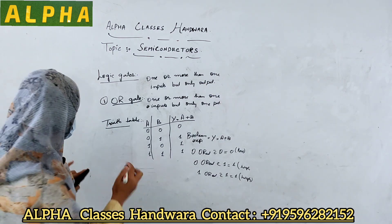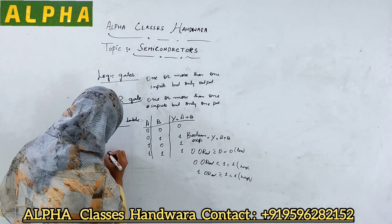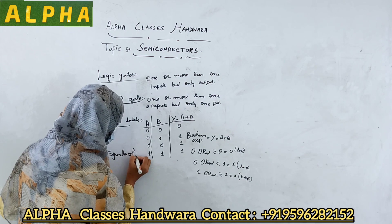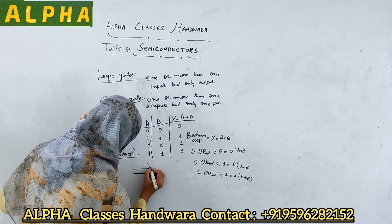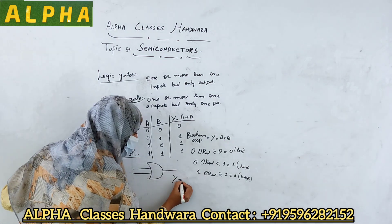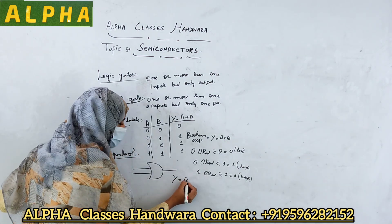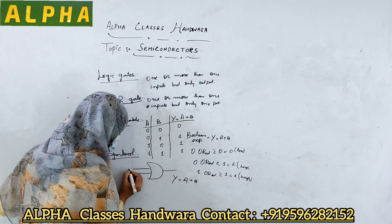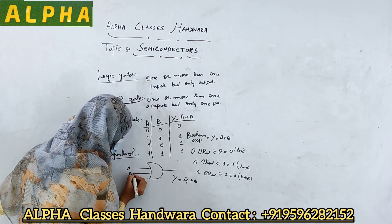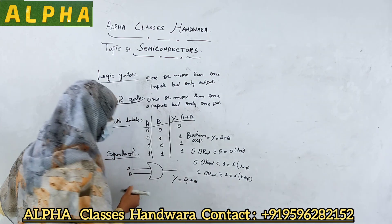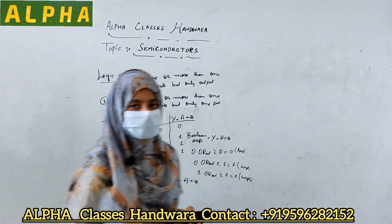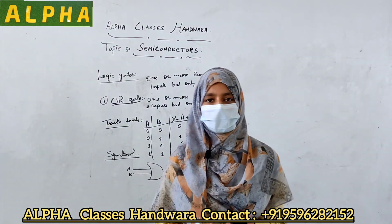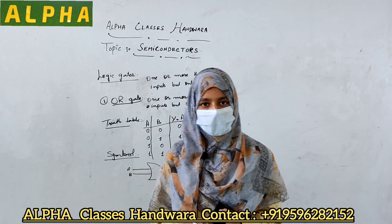Let us see its symbol. The symbol for the OR gate: Y equals A OR B, with A and B as the two inputs. This is the logic symbol for the OR gate. This was all about the OR gate.